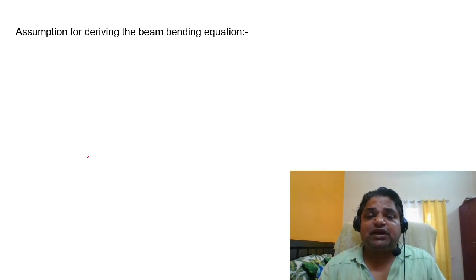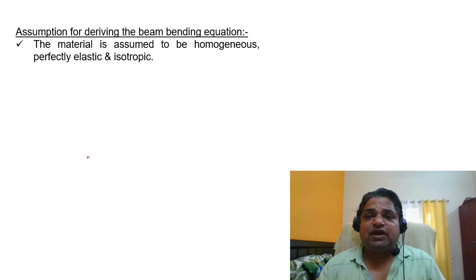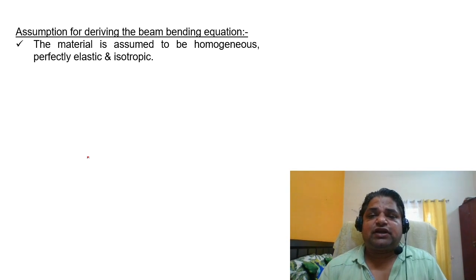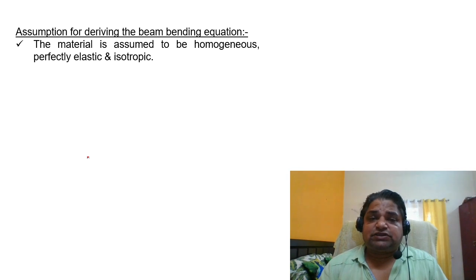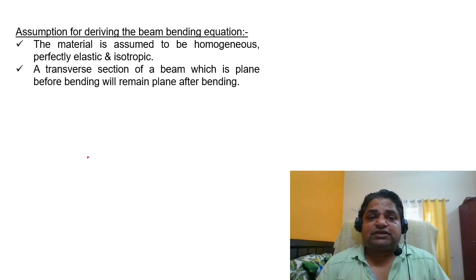To derive the flexural equation, we need certain assumptions. First, the material is assumed to be homogeneous, perfectly elastic, and isotropic. In the mechanics of solids approach, all materials are taken as homogeneous and isotropic and must obey Hooke's law — that is, stress is directly proportional to strain within the elastic limit.